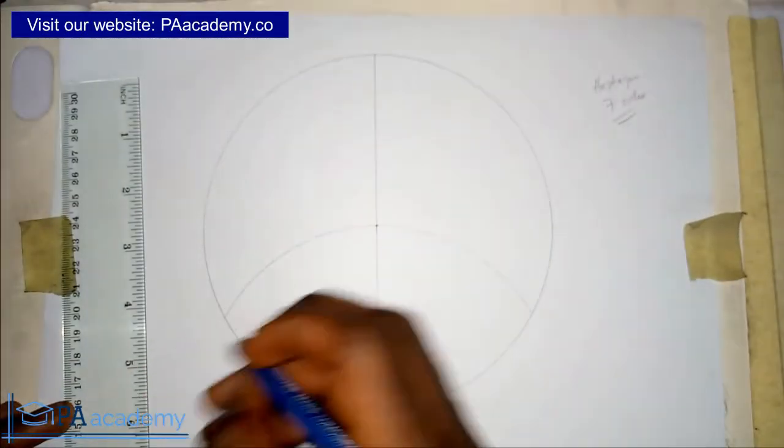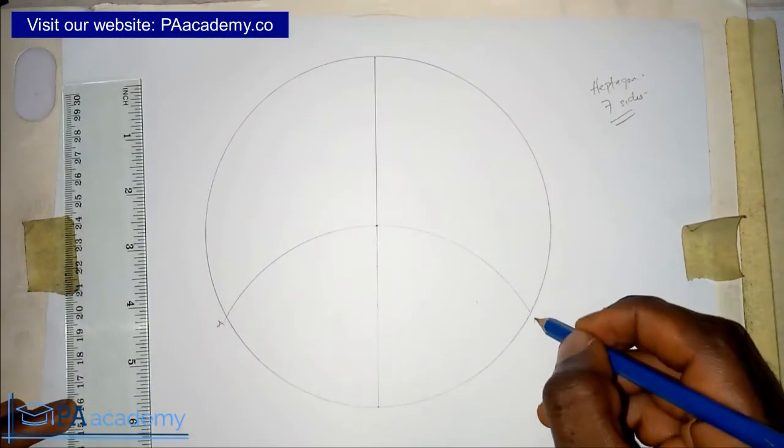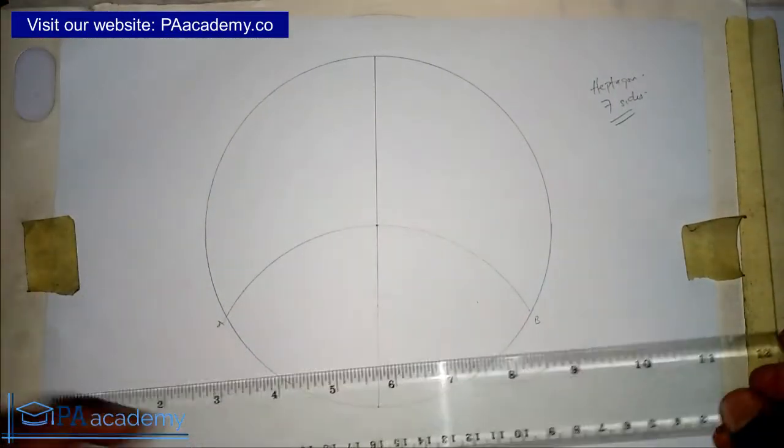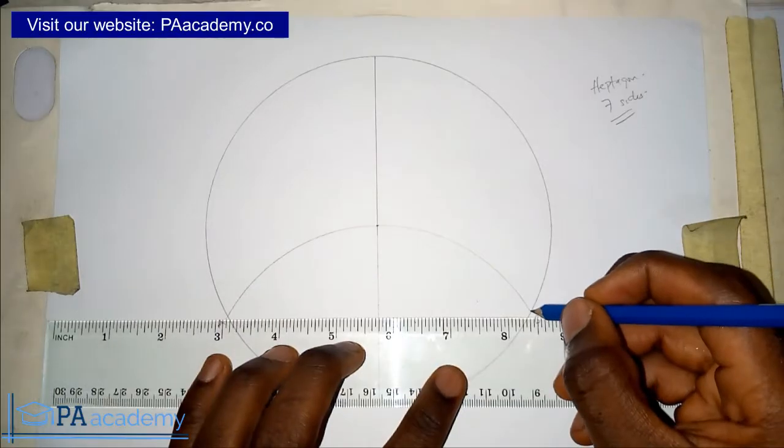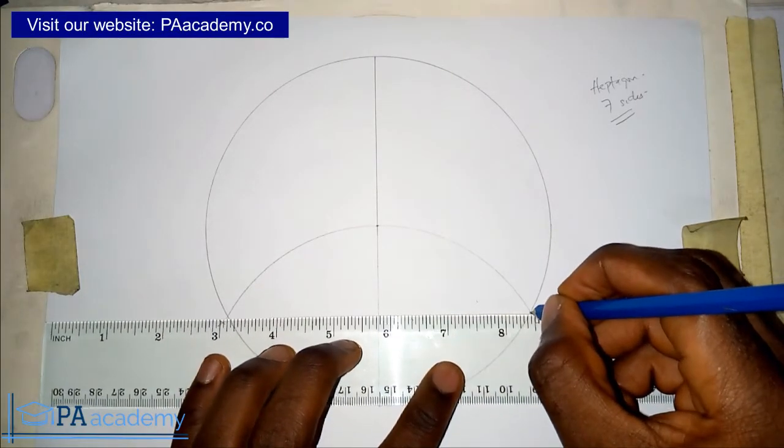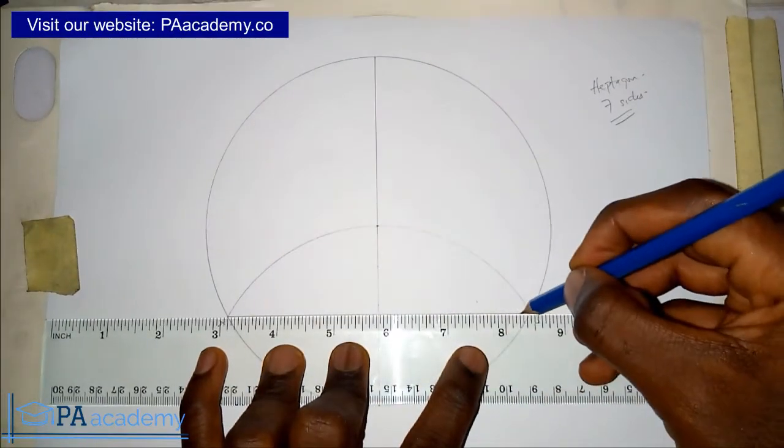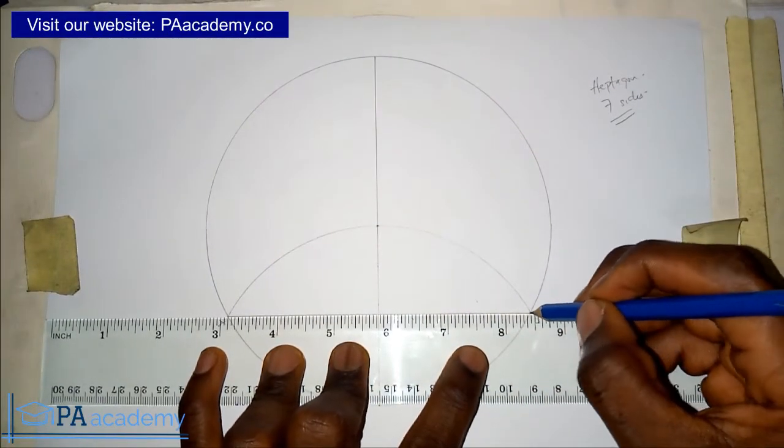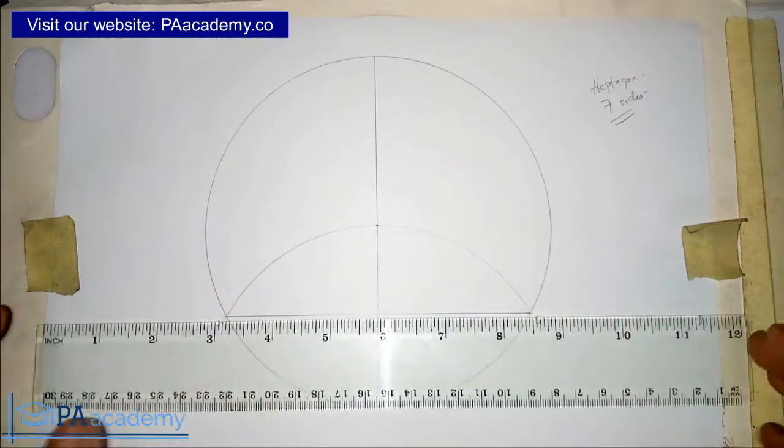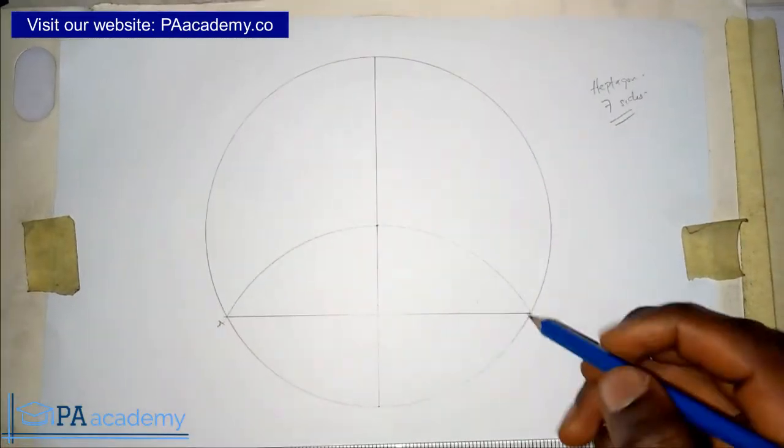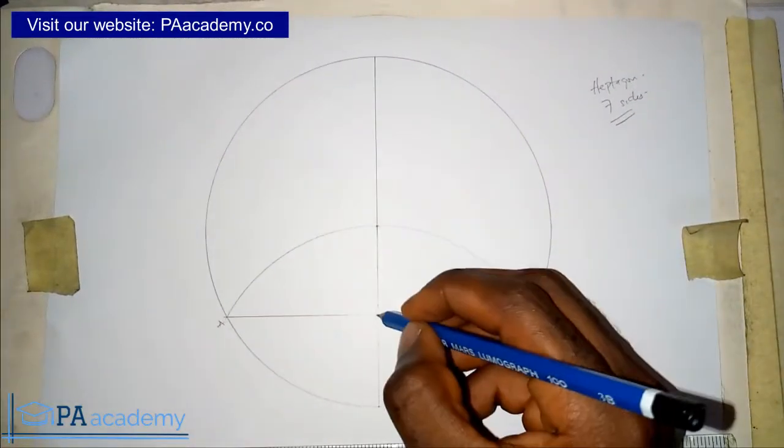Let's call this point point A and then let's call this point B. Now you bring in your ruler and then you join point A and point B together. This line AB is touching the diameter. Let's call this point C.